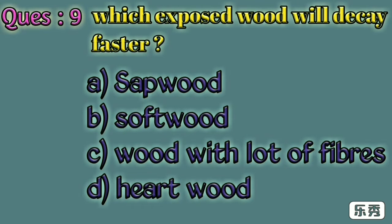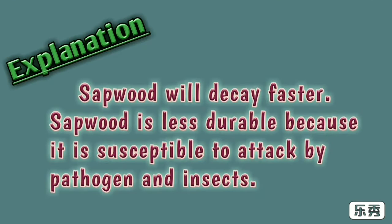Ninth one. Which exposed wood will decay faster? A) sap wood, B) soft wood, C) wood with a lot of fibres, D) heart wood. Here A, sap wood, is the right answer. Sap wood will decay faster because it is susceptible to attack by pathogens and insects.